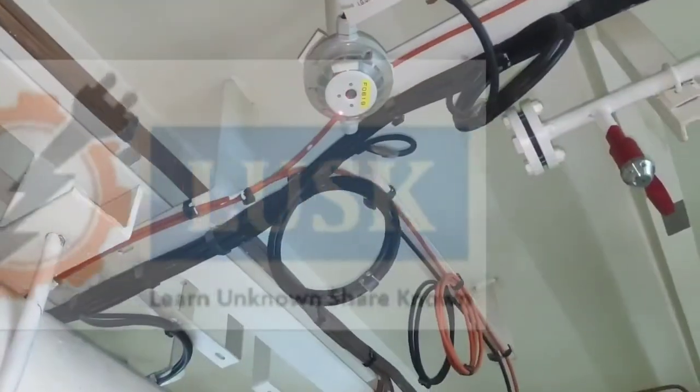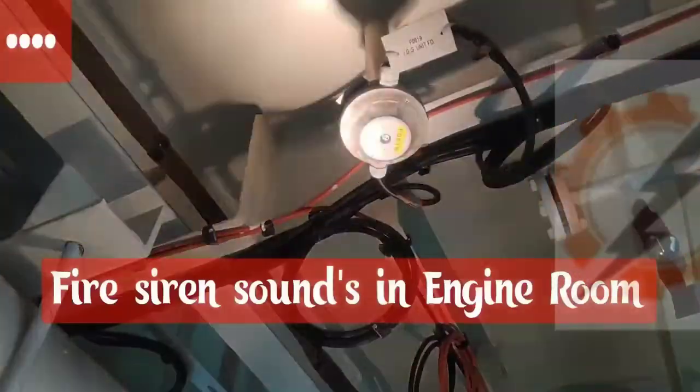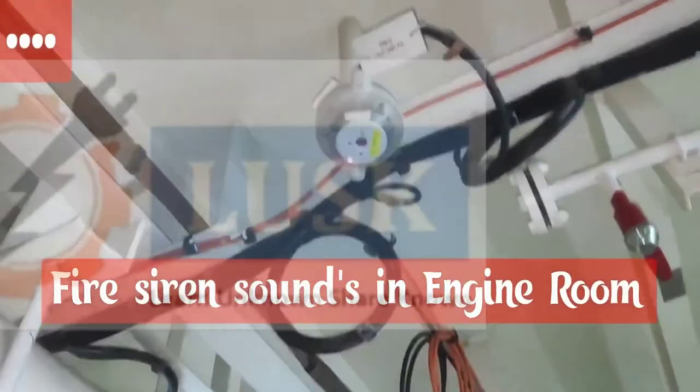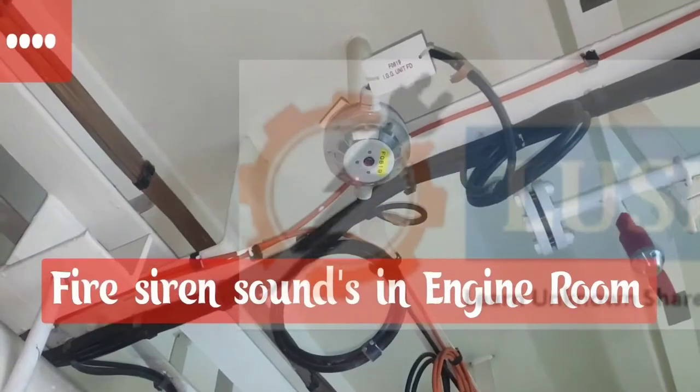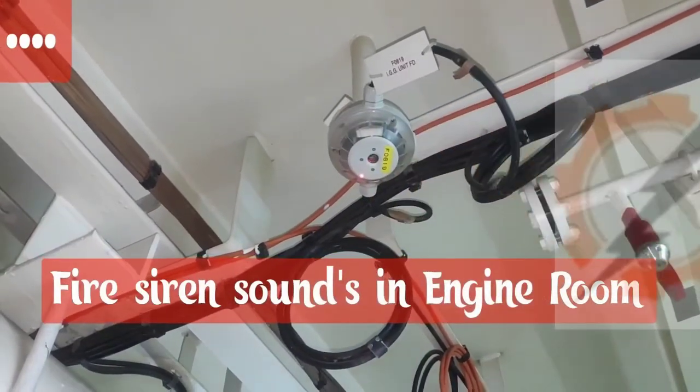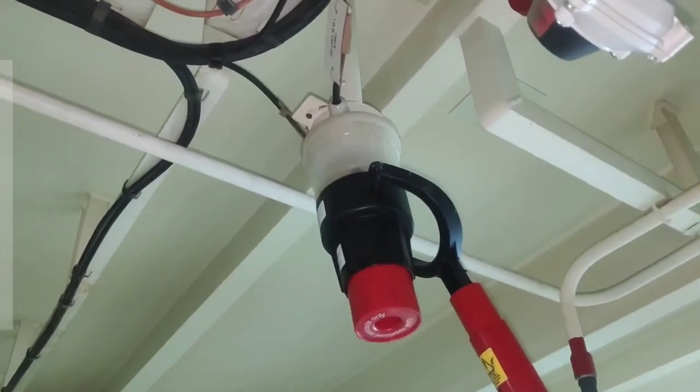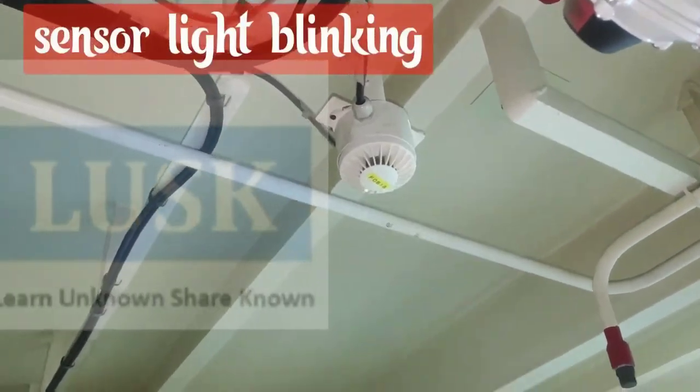Here you can see, I am activating the flame sensor using the UV lamp. After activating the flame, there is a nozzle you can see. Water will not come because when we activate smoke and flame together, then only water will be activated.